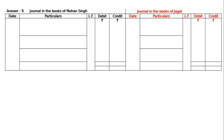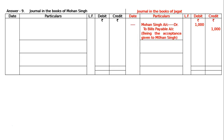Journal in the books of Jagat: Mohan Singh drew the bill on Jagat, hence Jagat gave the bill. Go to the journal of Jagat and write down Mohan Singh debited to Bills Payable Account — being the acceptance given to Mohan Singh for Rs.1000.